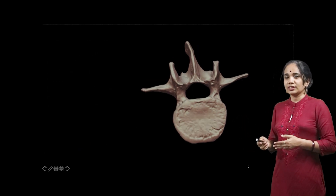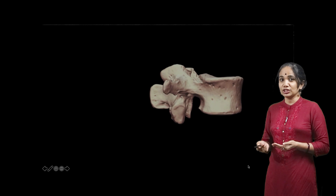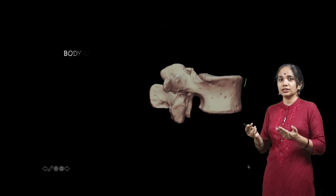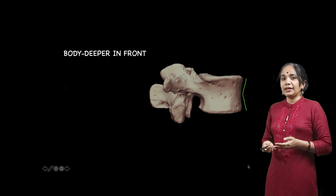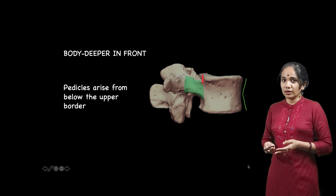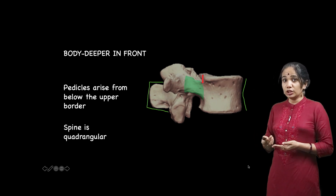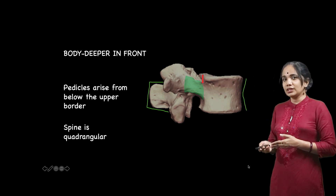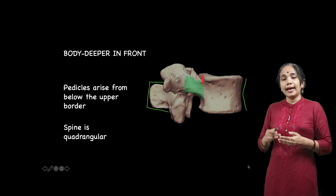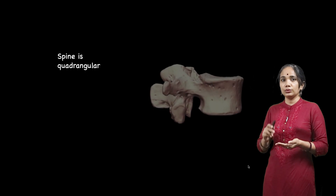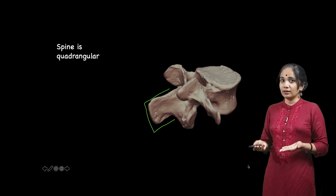Looking at the lumbar vertebra from the lateral view, the body is over here and is slightly concave — not a straight structure. The pedicles are seen to arrive slightly below the superior border of the lumbar vertebra, and because of that it has a superior and inferior spinous notch which is rather deep. The characteristic feature of the lumbar vertebra is the spine, which is quadrangular — really square-ish in shape, as outlined in the picture.